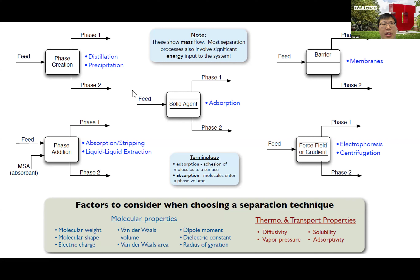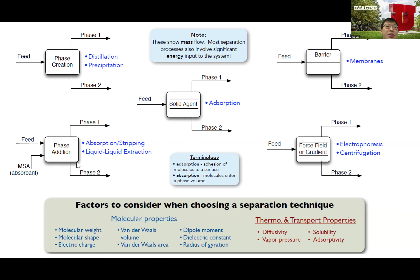On Monday we already talked briefly about three different types of separations based on different mechanisms. We talked about phase separation based on phase creation, which includes distillation or precipitation, where you create a new phase from the existing phase so you can separate the two phases. Then we talked about the phase addition method, where you add an absorbent that will selectively absorb some components of your feed mixture so that you can separate them out.